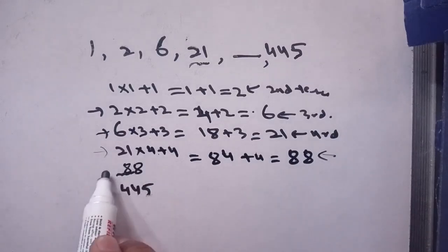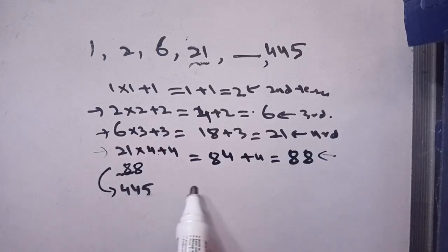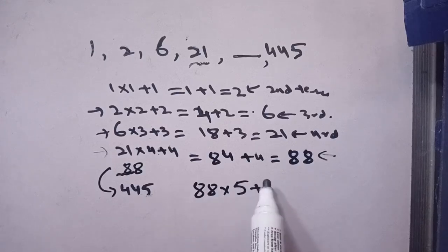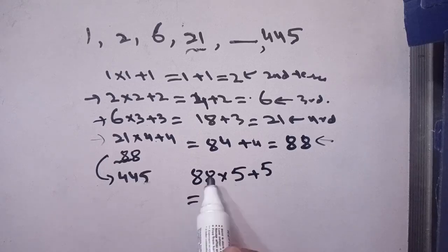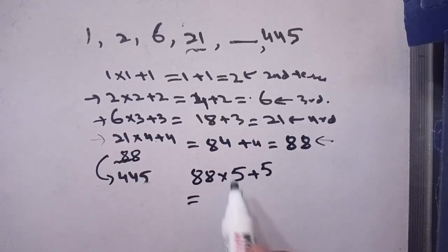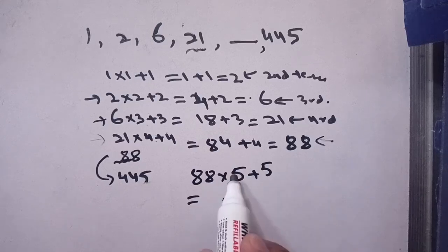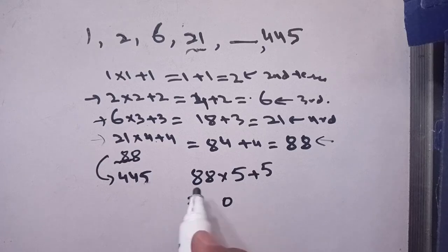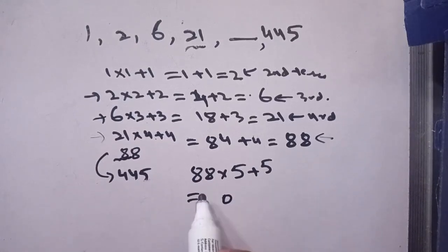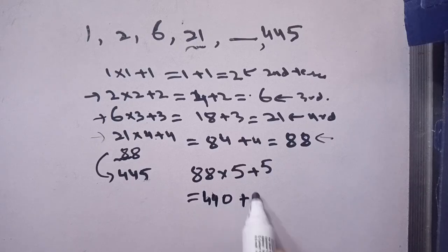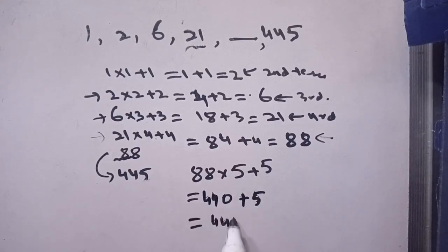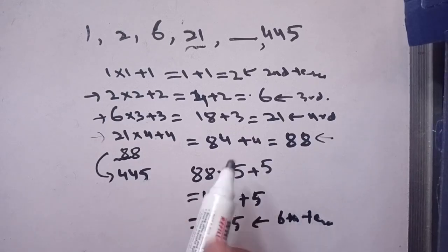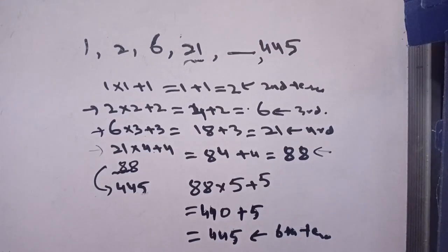This pattern also satisfies the sixth term. Multiply 88 by 5 and add 5. It becomes 5 times 88 equals 440, and plus 5 equals 445. This is our sixth term, confirming the pattern satisfies all terms.